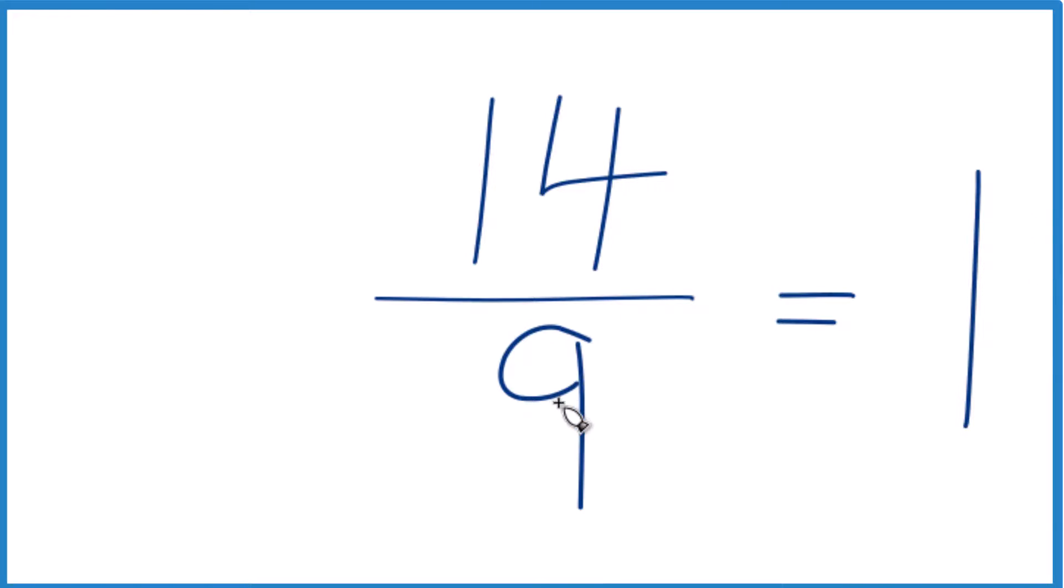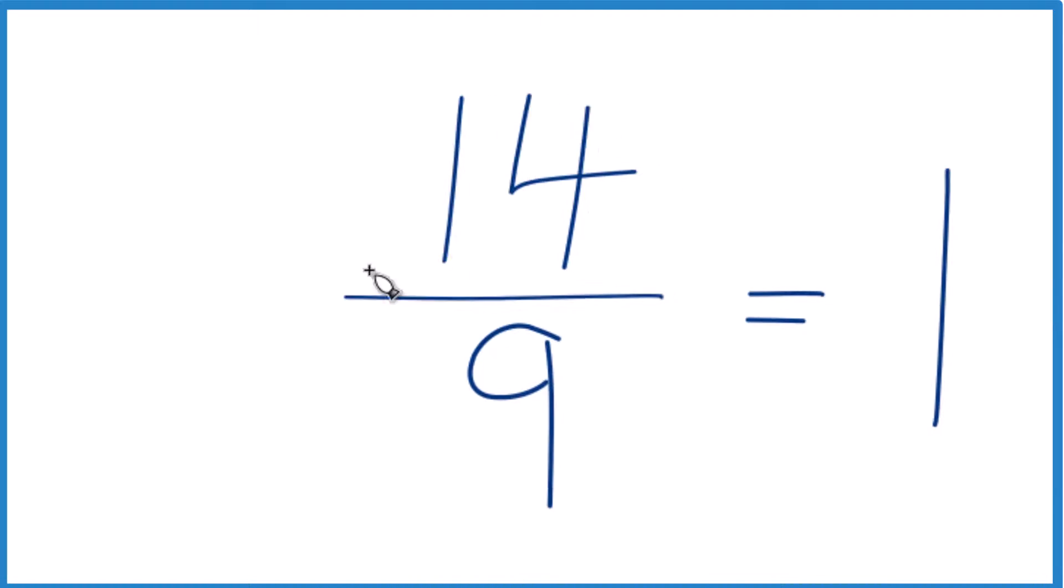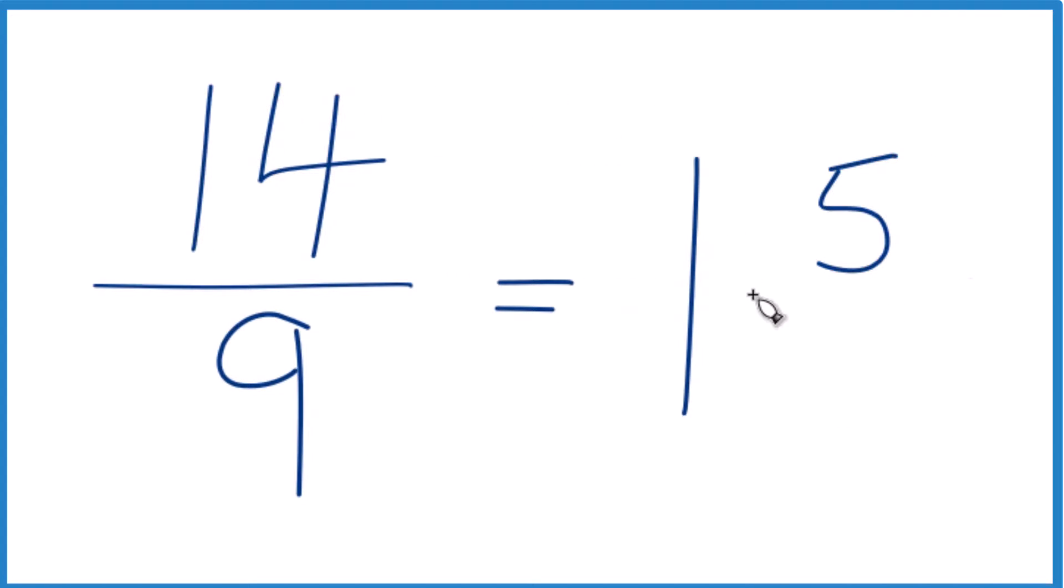And then one times nine, that gives us the nine, but we'd have a remainder of five. So we put that as the numerator, and we just bring the nine across.